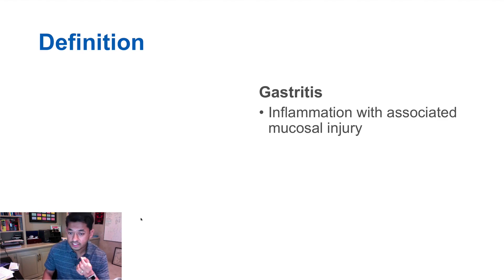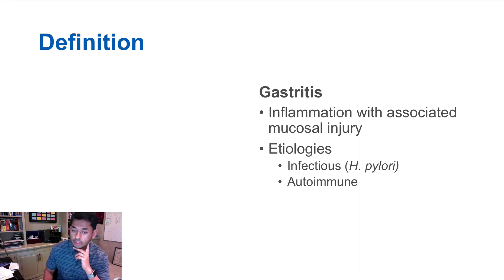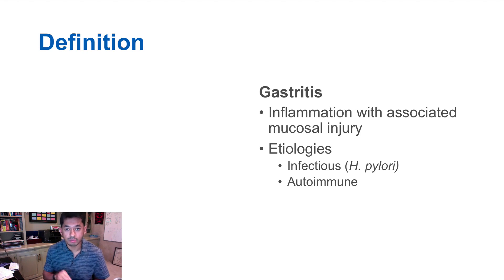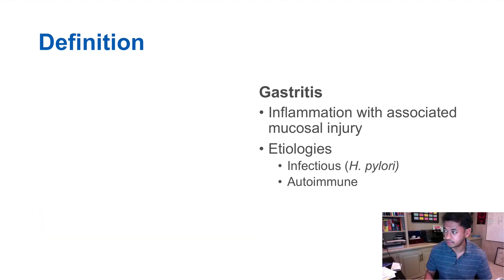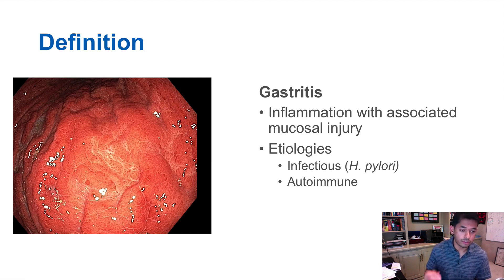When we talk about gastritis, this is inflammation associated with mucosal injury — so there is damage seen on histology. The most common causes are H. pylori and autoimmune diseases, including pernicious anemia. But by far and large, H. pylori is the most common cause of gastritis. Here you can see a picture of H. pylori gastritis in which you see a lot of inflammation, and there is also mucosal injury seen on histology as well.